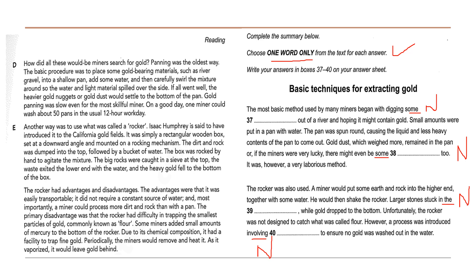The first question is about the most basic method used by many miners. It began with digging some material out of a river hoping it might contain gold. Small amounts were put in a pan with water. The pan was spun around, causing the liquid and less heavy contents to come out. Let's underline the keywords: basic method, digging, and small amounts were put in a pan with water.